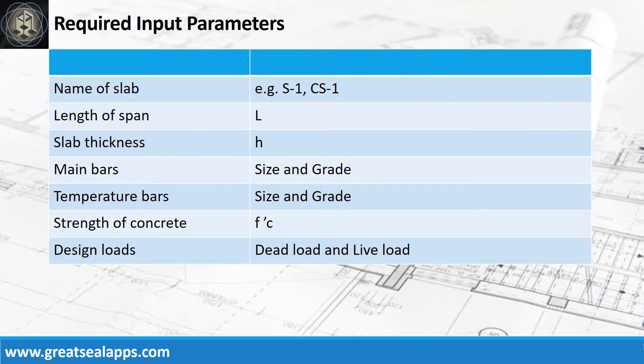Enumerate input parameters required: name of slab like S1 or CS1, length of span, slab thickness, main bars with size and grade, temperature bars with size and grade, strength of concrete, and design loads.